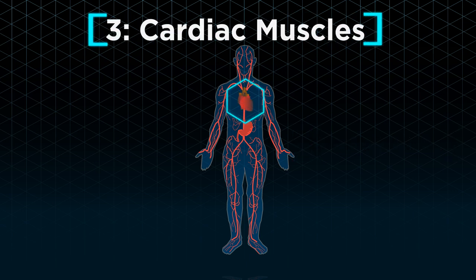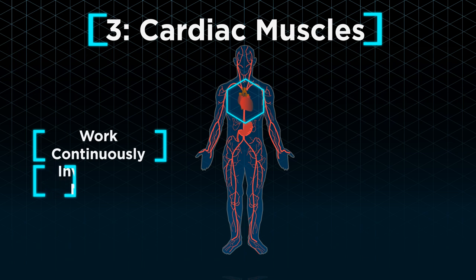Cardiac muscles that make up our heart are able to work continuously without tiring. Like smooth muscles, cardiac muscles are also involuntary. We cannot make our heart work faster or slower.